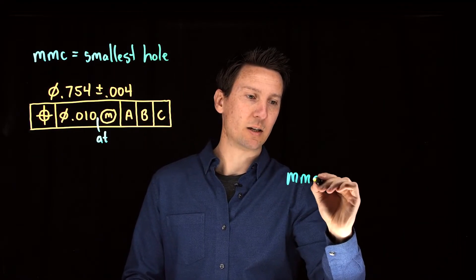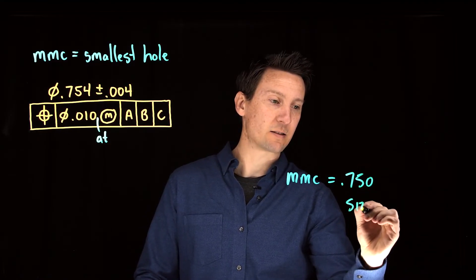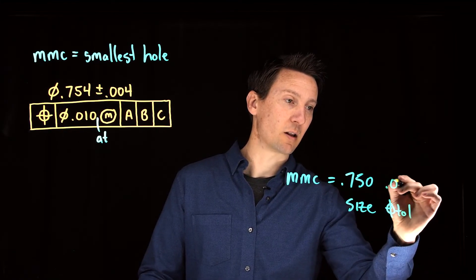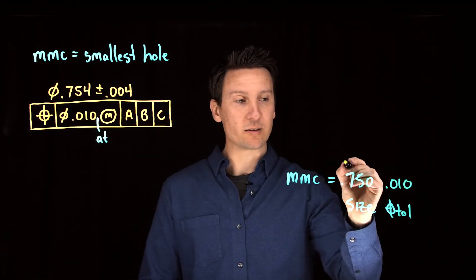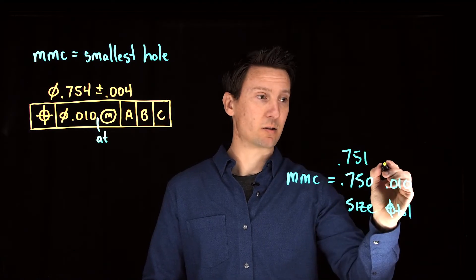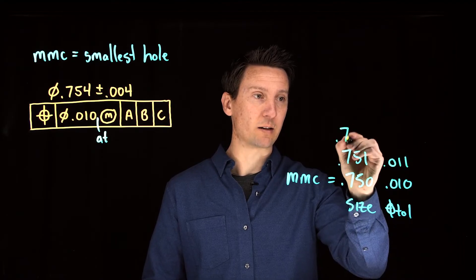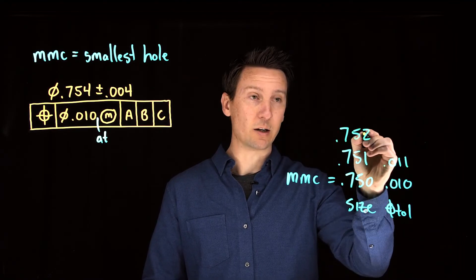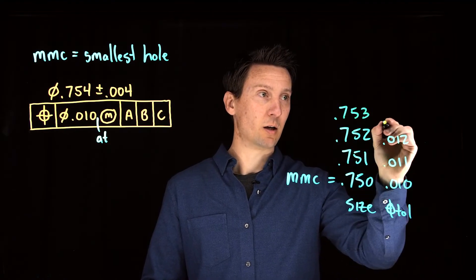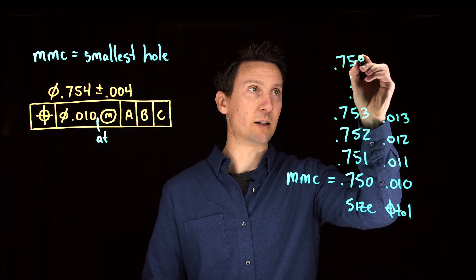So at our MMC, which is in this case 750, when you make it at that size then your position tolerance will be the baseline 10 thou. Now the MMC modifier says as the hole gets bigger, 751, then you get a bonus tolerance, you get 11, one bigger, one more. If you make it at 752, you made it two bigger from MMC, so then you get two more. 753, you'll get 13, and then all the way up to 758.